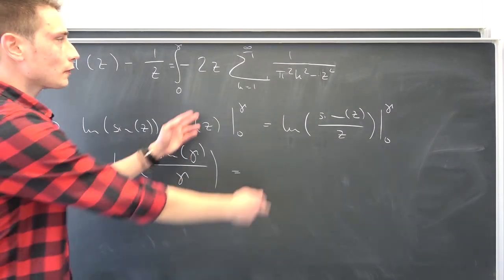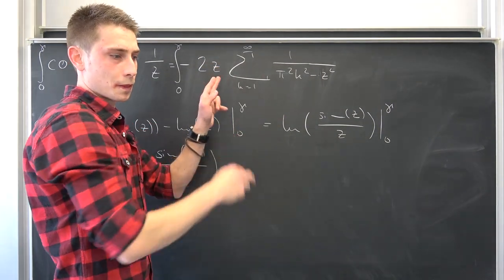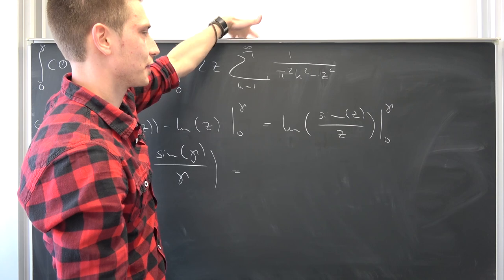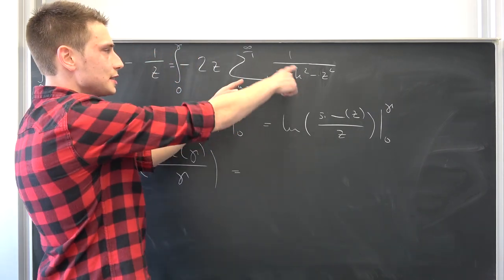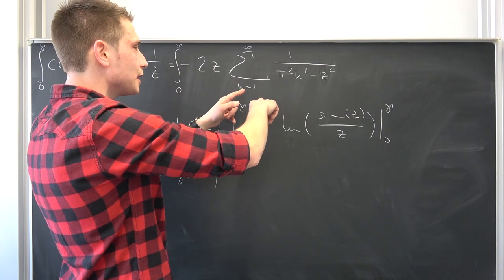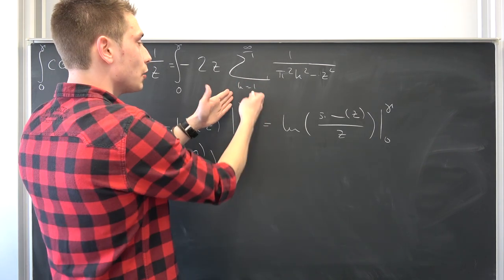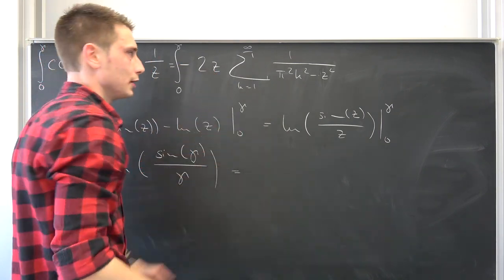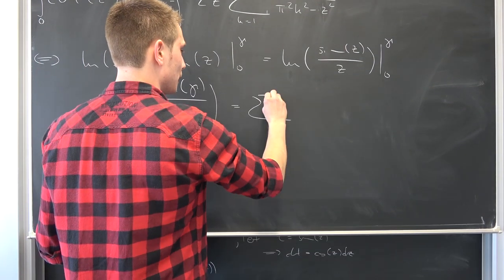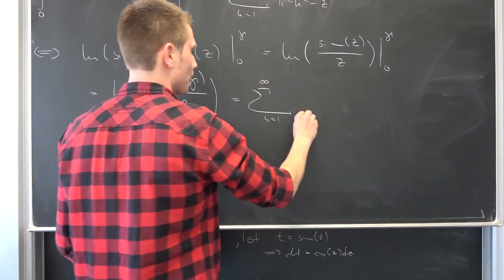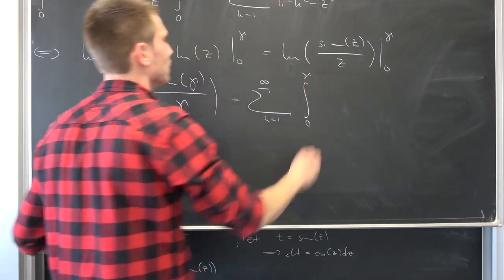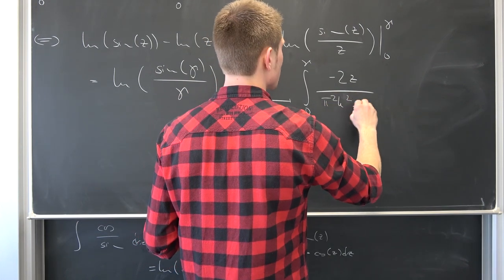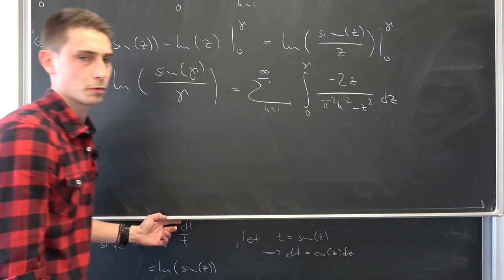This being equal to this series by my knowledge should converge uniformly. I'm having a speech barrier today. This series should converge uniformly, meaning we should basically be allowed to interchange this infinite summation, the series, this limit with this integral sign which is another limit. Let's bring it to the outside, leaving us with a sum running from 1 to infinity, integral from 0 to gamma of negative 2 times z over pi squared k squared minus z squared integrated with respect to z.